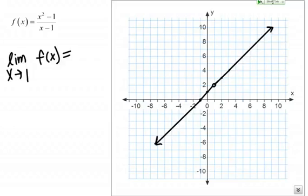Just like Jim showed you, the function doesn't exist at X equals 1, right? Because if we plug in X equals 1 to this function, we get 0 over 0.